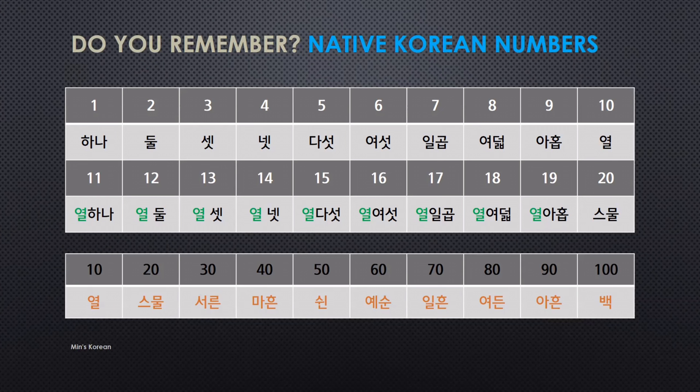11 is the same pattern as Native Korean numbers — you can say just 10 and 1 together. So: 십일, 십이, 십삼, 십사, 십오, 십육, 십칠, 십팔, 십구, 이십. So 2 and 10 together gives 20 — 이십. Then 삼십 is 30, 사십 is 40, 오십 is 50, 육십 is 60, 칠십 is 70, 팔십 is 80, 구십 is 90, and 백 is 100.